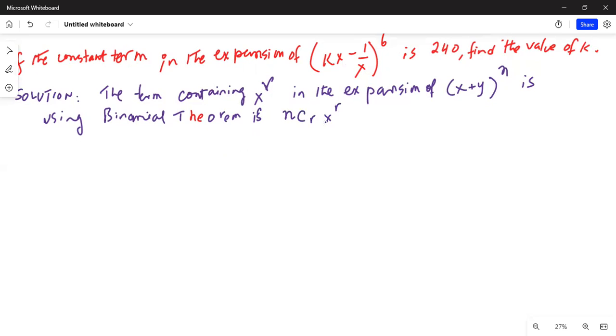The term is nCr·x^r·y^(n-r). In this problem, n equals 6, our x equals kx, and y is equal to 1/x. Now r can be any term from 0 to 6. Specifically, if r equals 4, then we get in the expansion...